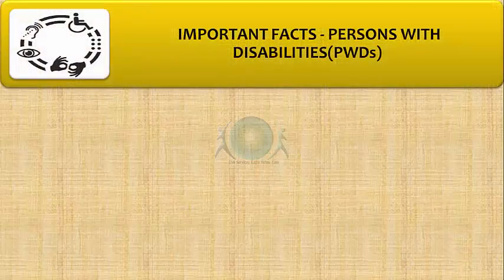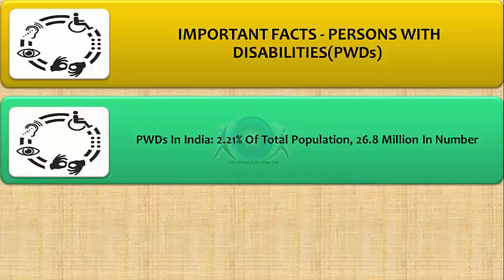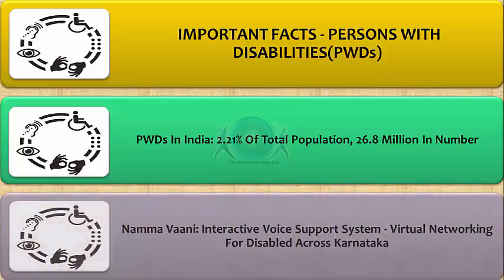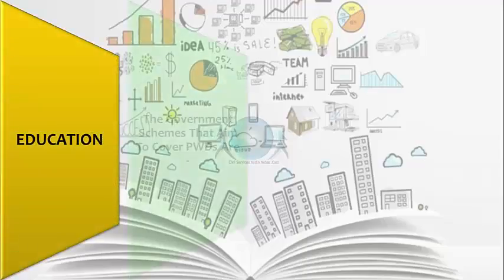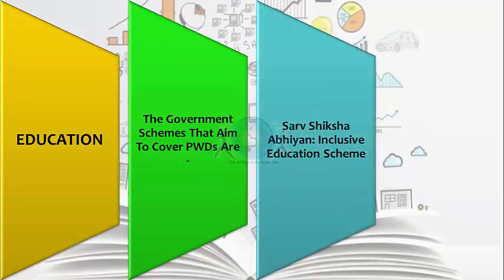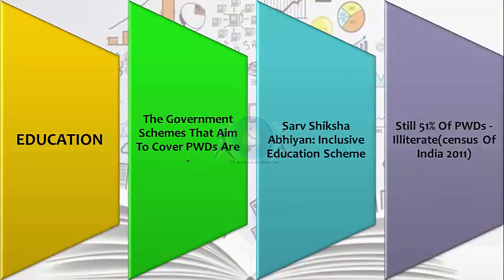Let us also note some important facts relating to persons with disabilities. PWDs in India account for as much as 2.2% of the total population, nearly 27 million in number. There is Nammawani, an interactive voice support system which provides virtual networking of disabled persons across Karnataka, though such initiatives are not present in many states. Regarding education, the government scheme Sarva Shiksha Abhiyan is an inclusive education scheme, but 51% of PWDs remain illiterate according to the Census of India 2011.